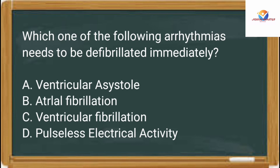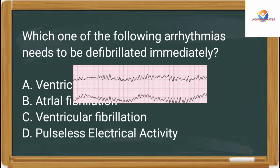Ventricular fibrillation, commonly called V-fib, is a chaotic or irregular pattern of electrical activity in the ventricles in which electrical impulses originate from many different foci. It produces no effective ventricular contraction and no cardiac output. On the ECG strip, it is difficult to differentiate P, QRS, and T waves.